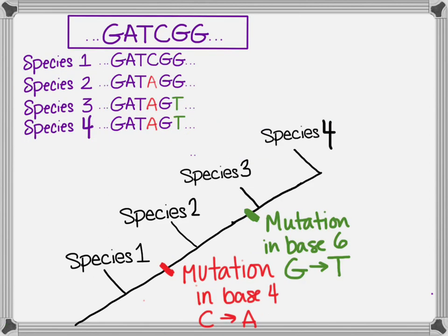So now I've added another species, and I also did something different with species 3. Species 3 now has two mutations. Species 1 still has no mutations. Species 2 has two mutations. Species 3 has got two mutations, and so does species 4. You can see that in species 3 and 4 that last base, base 6, has changed from G to T. All the tricks that we used with structural cladograms still work here.